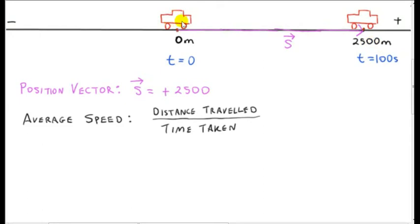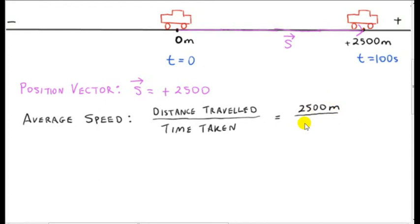Its magnitude is 2500 meters. Now we have no idea how this car moves as it goes from zero meters to plus 2500 meters on the axis. But we can consider its average speed — that's the distance traveled, which is plus 2500 meters, divided by the time taken, which is 100 seconds. We are interested in the average distance the car covers in one second — that's 25 meters.